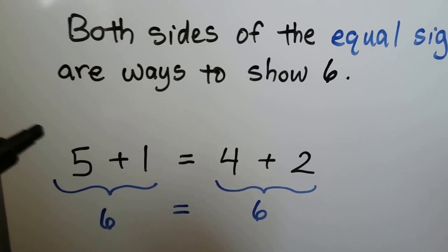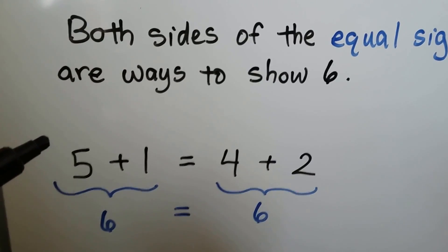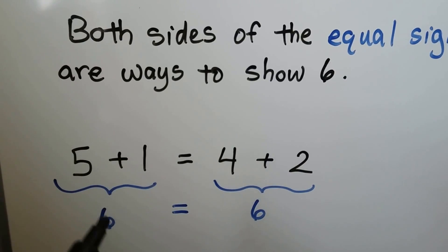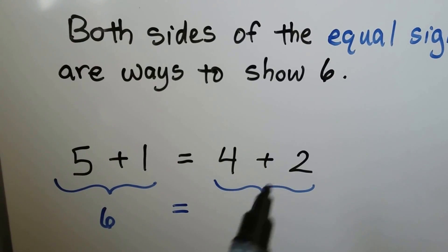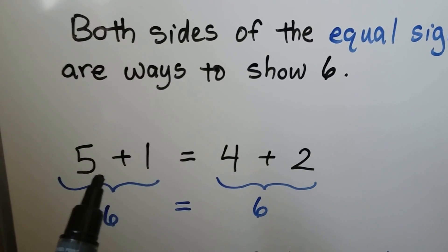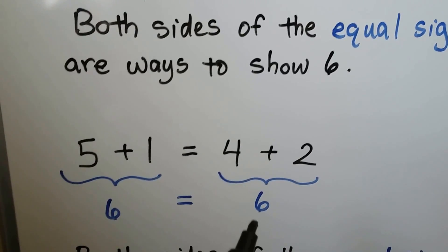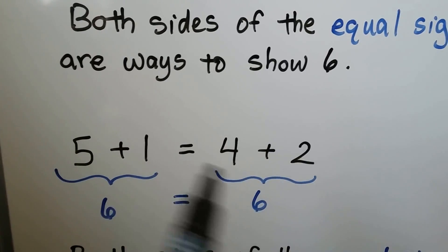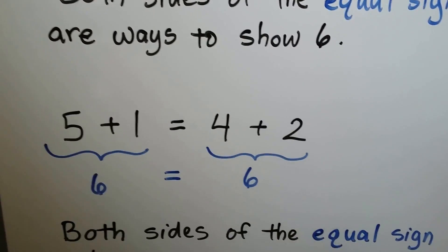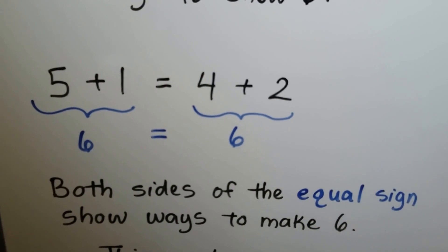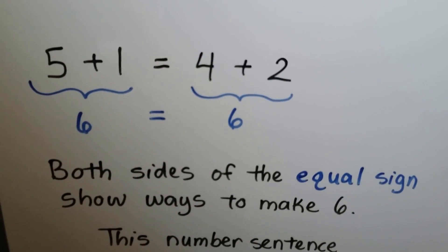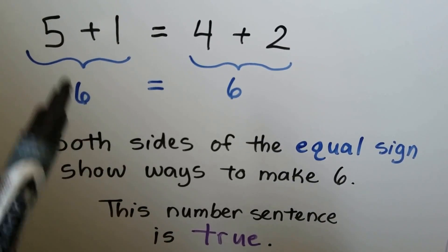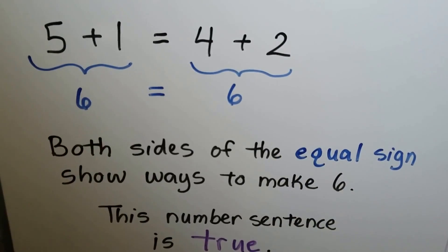Here we have 5 plus 1 is equal to 4 plus 2. This side is equal to 6, and this side is equal to 6. 5 plus 1 is a way to make a 6, and 4 plus 2 is a way to make a 6. Both sides of the equal sign are showing the same amount. That means this number sentence is true. Both sides are showing the same amount.